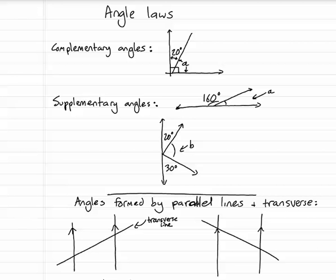Angle laws. This is just a quick review of our main angle types. Complementary angles add up to 90 degrees.